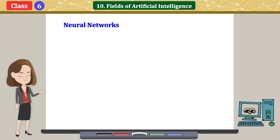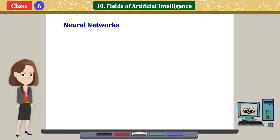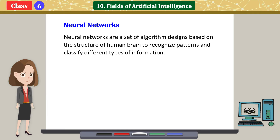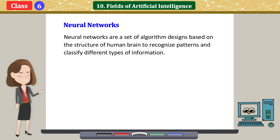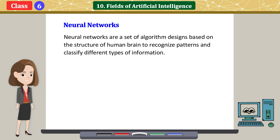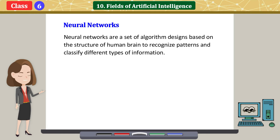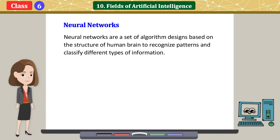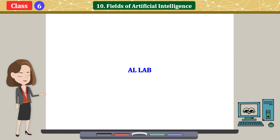Neural Networks are a set of algorithm designs based on the structure of the human brain, used to recognize patterns and classify different types of information.